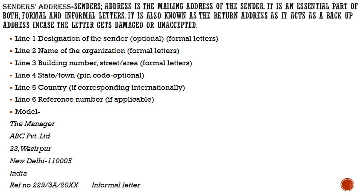Now we will look at the parts of a letter. The first and major part is the sender's address. The sender's address is the mailing address of the sender. It is an essential part of both formal and informal letters. It is also known as the return address, and it acts as a backup address in case the letter gets damaged or is unaccepted.